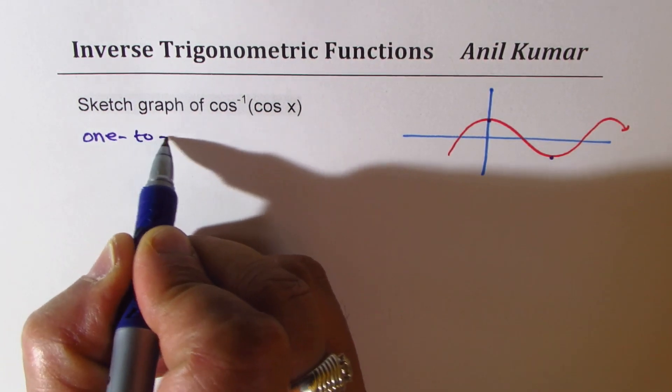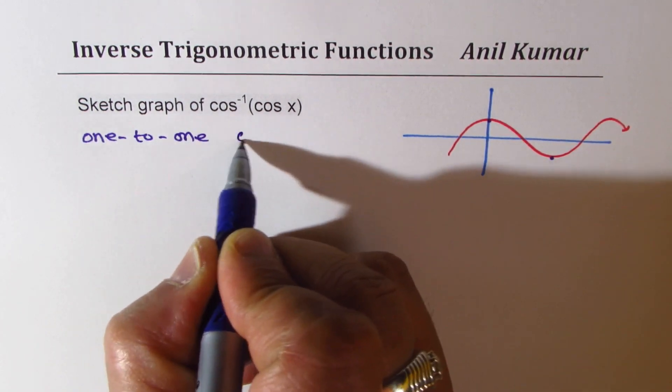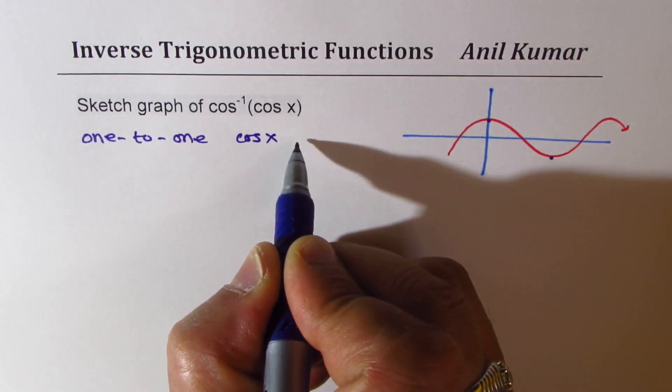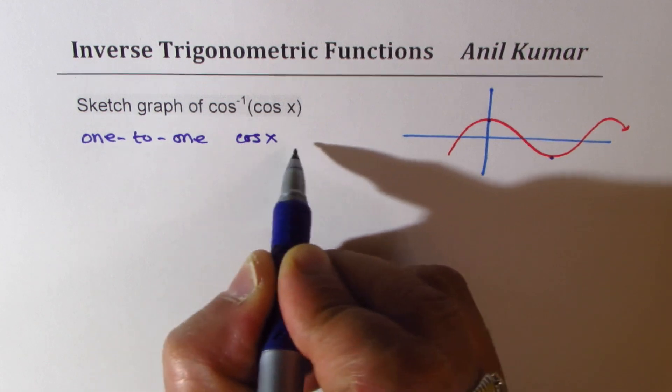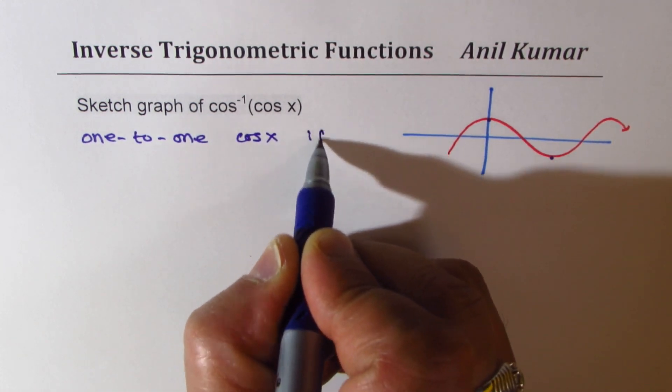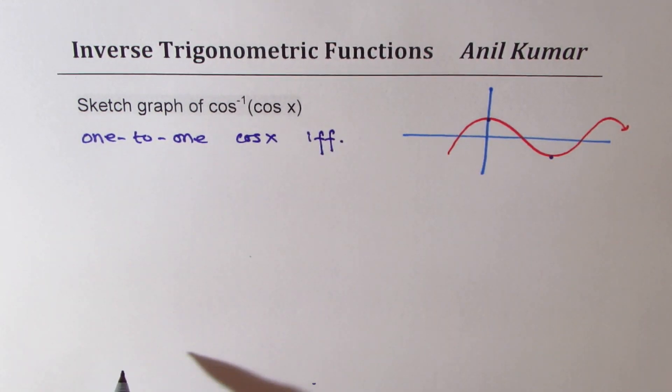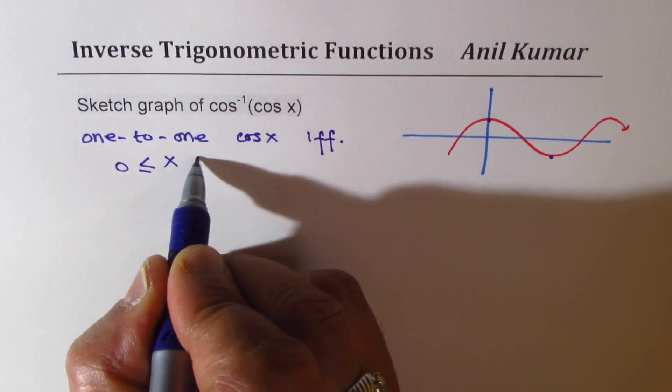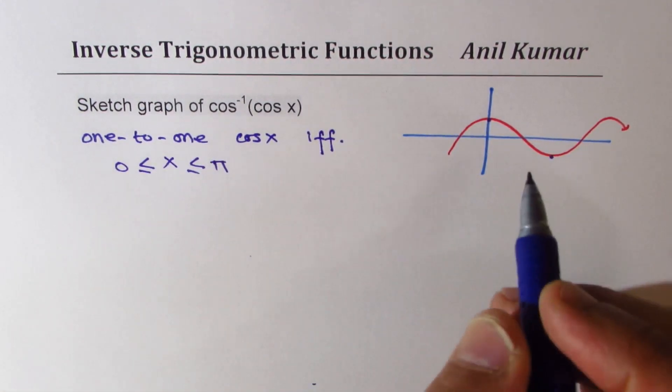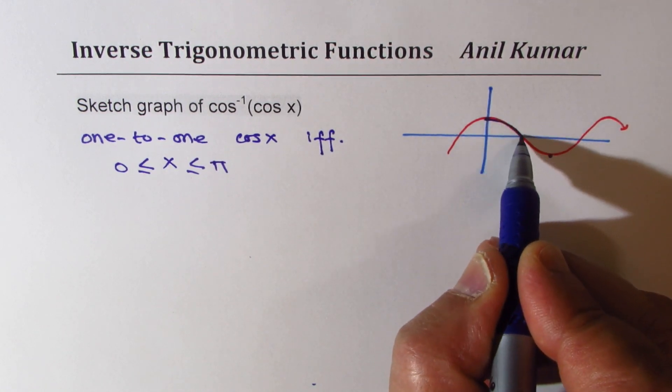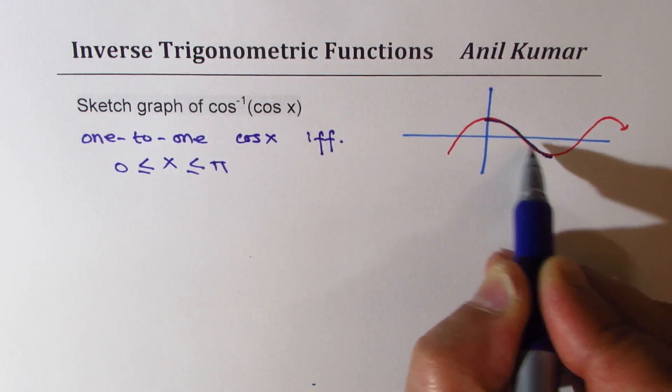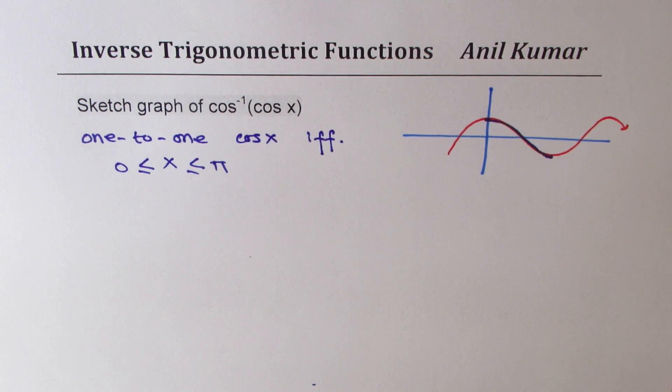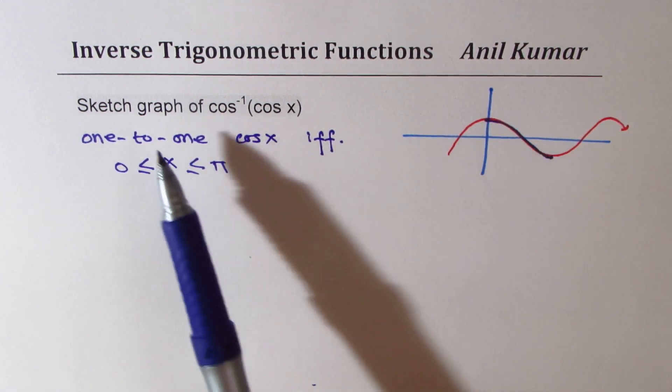To find the inverse, we have a 1 to 1 cos x function if and only if x is between 0 to pi. We restrict the domain between these two points, and now this particular function becomes a 1 to 1 function. Therefore, we can find its inverse.